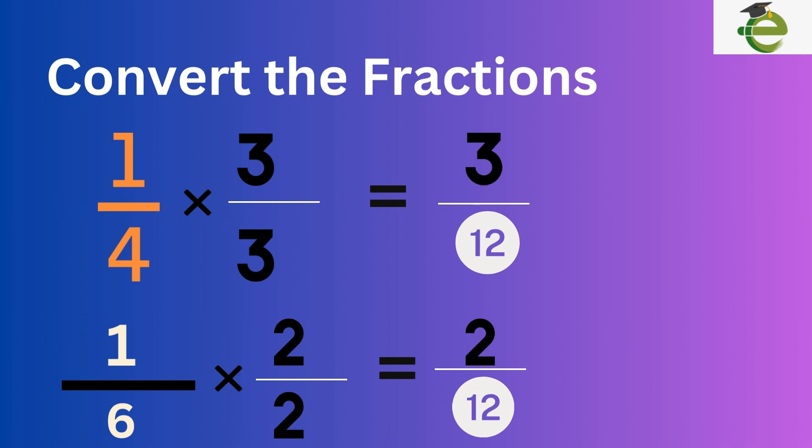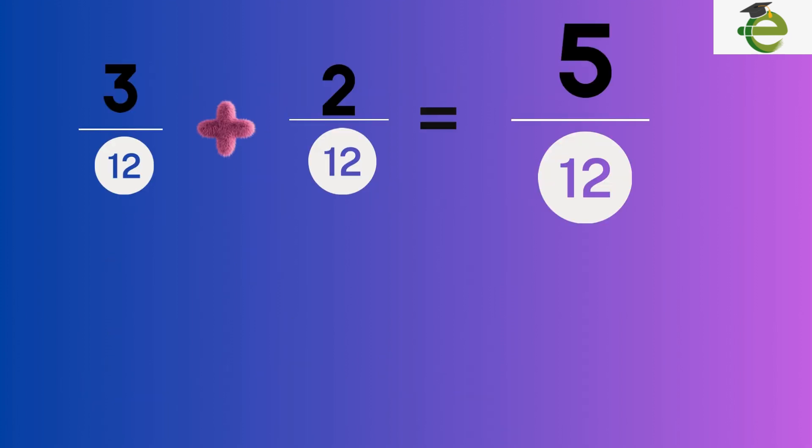Finally, convert the fractions so that they both have this common denominator. Do this by multiplying both the numerator and the denominator by the same number, so that the denominator matches the common denominator. Three-twelfths plus two-twelfths equals five-twelfths.